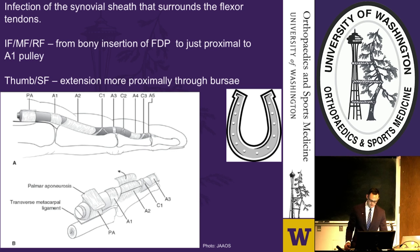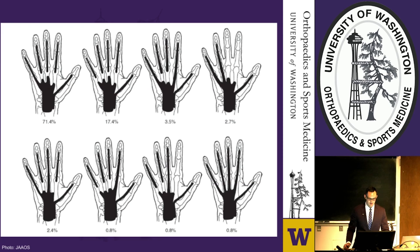This horseshoe shape illustrates the horseshoe abscesses that can develop when a small finger flexor tendon infection tracks through the radial and ulnar bursae and then develops into a thumb infection as well, forming a horseshoe abscess. This can happen because in approximately 80% of patients those radial and ulnar bursae are continuous, giving the potential for a horseshoe abscess to develop.